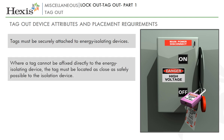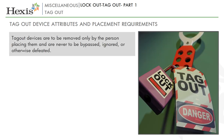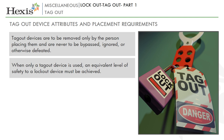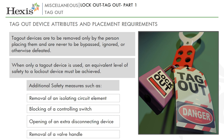Tags must be securely attached to energy-isolating devices so that they cannot be inadvertently or accidentally detached during use. Where a tag cannot be affixed directly to the energy-isolating device, the tag must be located as close as safely possible to the isolation device in a position that will be immediately obvious to anyone attempting to operate the isolating device. Tag-out devices must be affixed in such a manner to clearly indicate that operation or movement of the energy-isolating device from the safe or off position is prohibited. Tag-out devices are to be removed only by the person placing them and are never to be bypassed, ignored or otherwise defeated. When only a tag-out device is used, an equivalent level of safety to a lock-out device must be achieved through supplemental safety measures such as removal of an isolating circuit element, blocking of a controlling switch, opening of an extra disconnecting device, or removal of a valve handle.